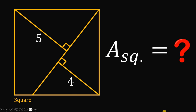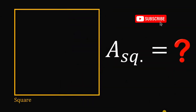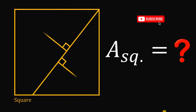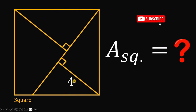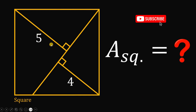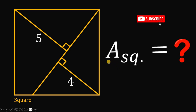Can you solve this viral geometry challenge? Here's the question. Given a square, let's draw some segments inside the square. The measure of one segment must be equal to 4 units and the measure of another segment must be equal to 5 units. The question is: what is the area of this square?